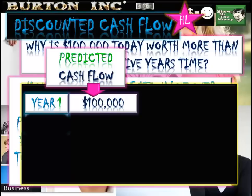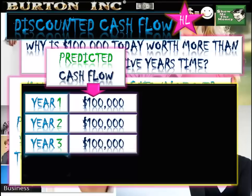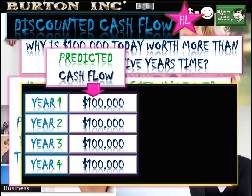Our investment is going to have a predicted cash flow, and this cash flow occurs over a number of years. The net cash flow in future years is going to be worth less to us than the same money if we received it straight away today. So if we look at the predicted cash flow in year four — $100,000 — that $100,000 is going to be received in four years' time.